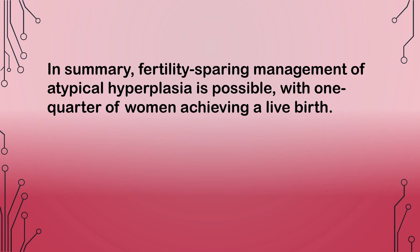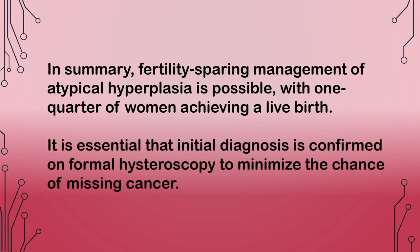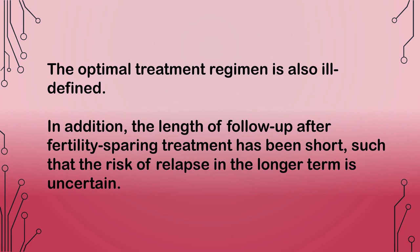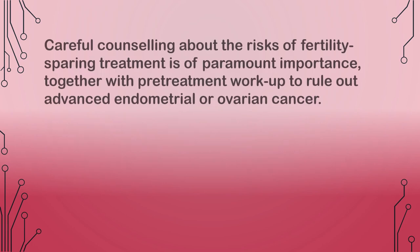In summary, fertility-sparing management of atypical hyperplasia is possible with one-quarter of women achieving a live birth. It is essential that initial diagnosis is confirmed on formal hysteroscopy to minimize the chance of missing cancer. The optimal treatment regimen is also ill-defined. The length of follow-up after fertility-sparing treatment has been short such that the risk of relapse in the longer term is uncertain. Careful counseling about the risks is of paramount importance together with pre-treatment workup to rule out advanced endometrial or ovarian cancer.